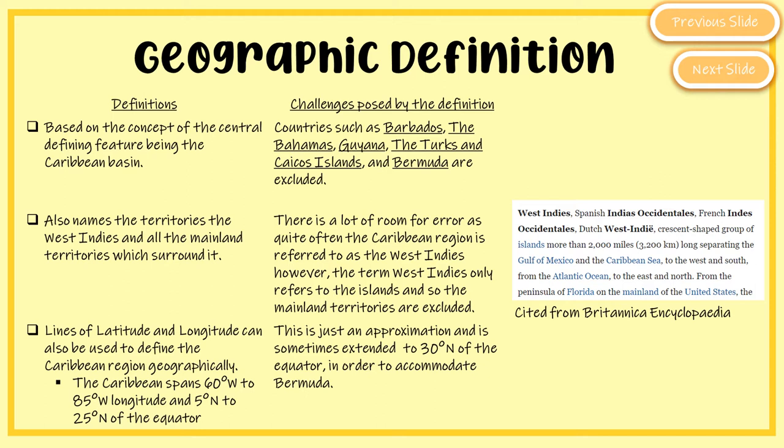You can also use lines of latitude and longitude to define the Caribbean geographically. By approximation, the Caribbean spans about 60 to 85 degrees west longitude and sits about 5 to 25 degrees north of the equator. This approximation often has to be extended to about 30 degrees north to accommodate a country like Bermuda, because both historically and politically that country is considered Caribbean.